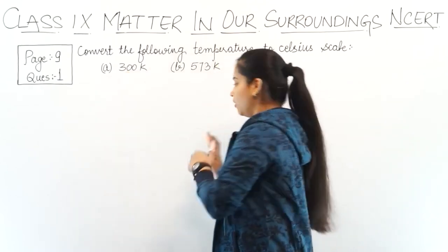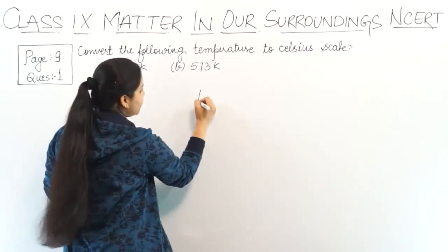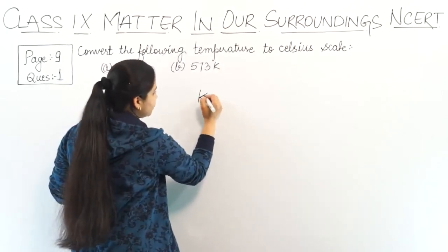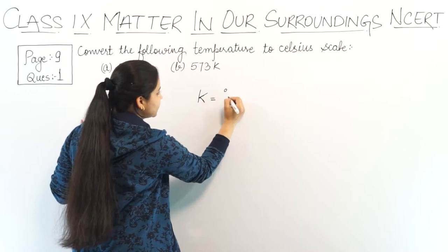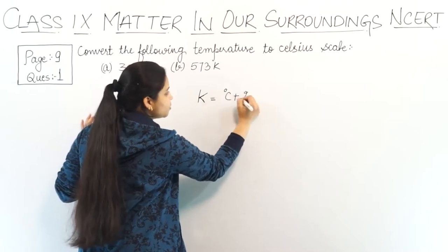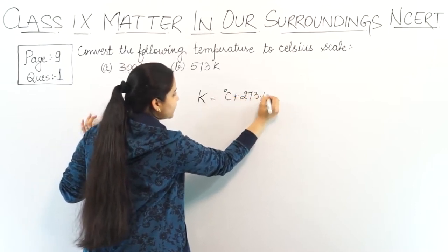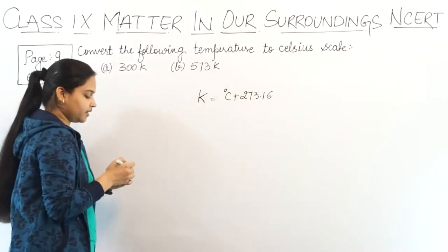There is a formula: Kelvin equals degree Celsius plus 273.16. It's the general formula.